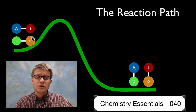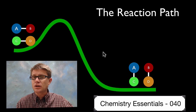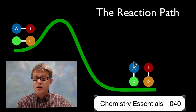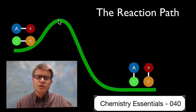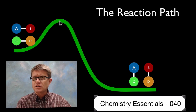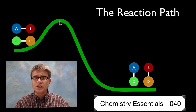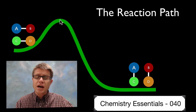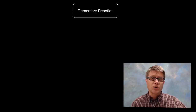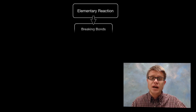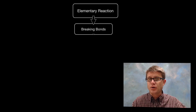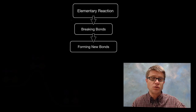Let's say we have two molecules: A bonded to B, and C bonded to D. We're going to create products where A is now bonded to C and B is bonded to D. We have to put some energy into the system — it's just not going to spontaneously occur. We have to add energy until we reach what's called the activation energy. In an elementary or one-step reaction, we have to break bonds and then form new bonds.